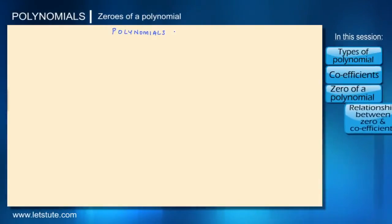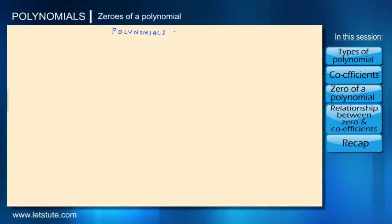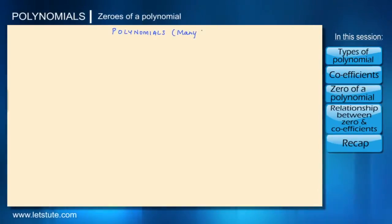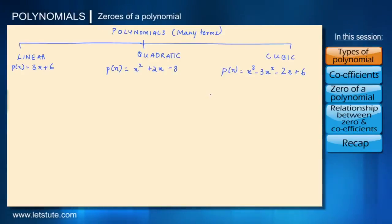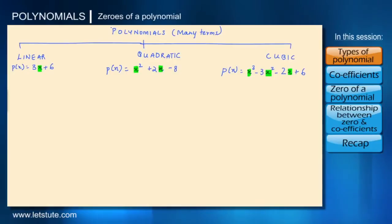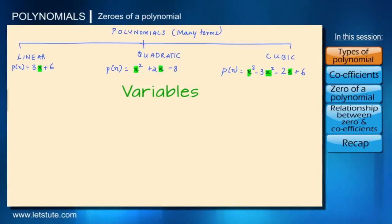Hello friends, today we are talking about polynomials. The word polynomials means many terms. We know they are classified into linear, quadratic, cubic and so on. Here the letters that we see have unknown values and they are called as variables.